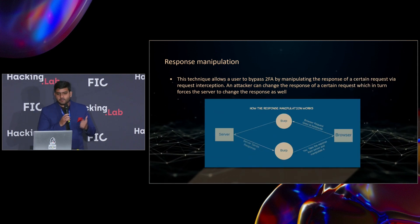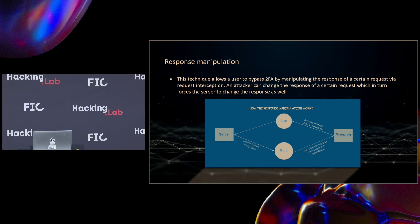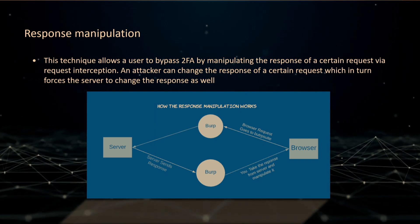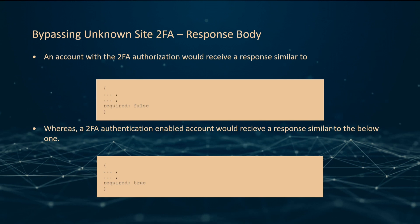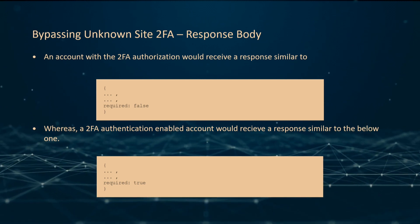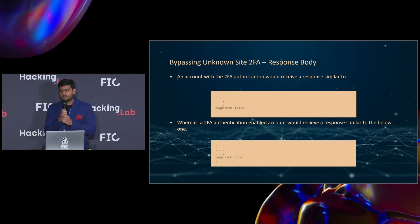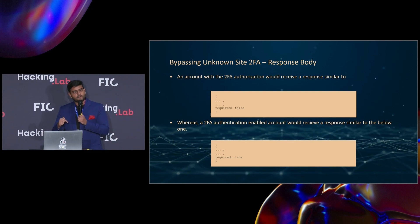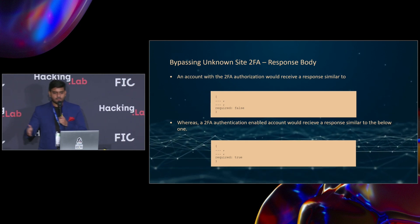Now we're going to manipulate responses. There are multiple ways: response codes, response bodies, and more. The simplest way to bypass 2FA using response code manipulation is to just turn the status from false to true. Trust me, 60% of applications using authorization bearers have this vulnerability. You intercept a request whose 2FA response is invalid or false, change it to true, and it allows you in.